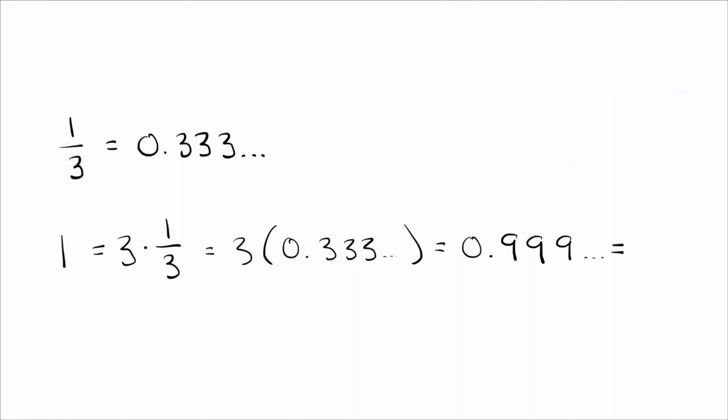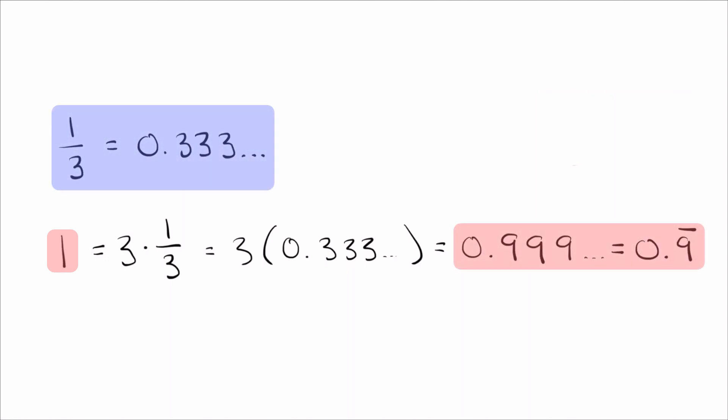So there we go — we just proved that 1 is the same thing as 0.9 repeating. The important fact was that 1/3 is the same as 0.3 repeating. That's the way you see it a lot, using 1/3. But that's definitely not the only way you can do it. In fact, it's not hard to see you can do exactly the same thing in a slightly different way. So let's go ahead and do it.